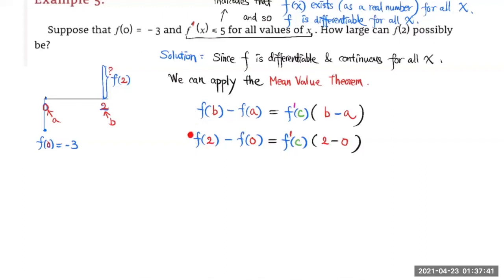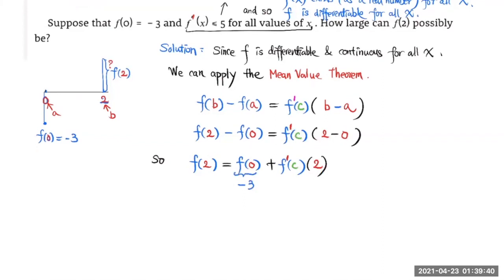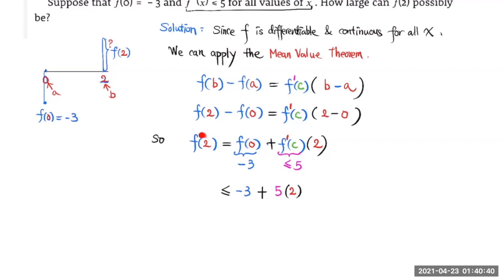And we are trying to find how large this f(2) can possibly be. So let's try to isolate this f(2) here. So we got f(2) = f(0) + f'(c) × 2. We know that f'(c) ≤ 5 because it says that f'(x) ≤ 5 for all x. So f(2) ≤ -3 + 5 × 2, which is equal to 7.